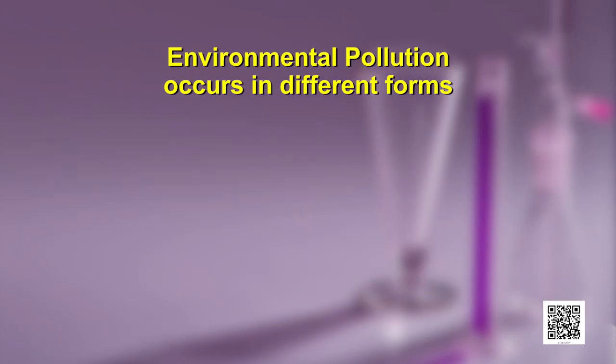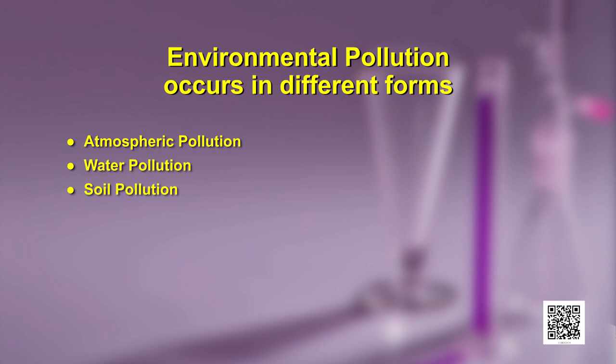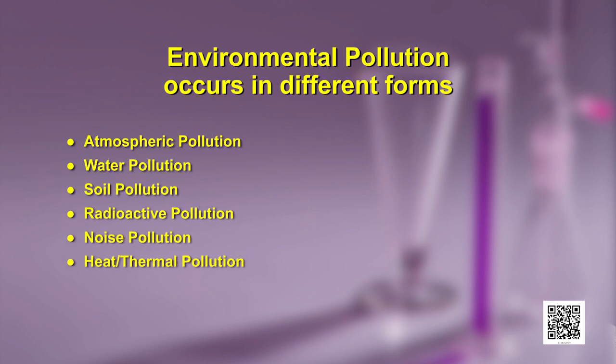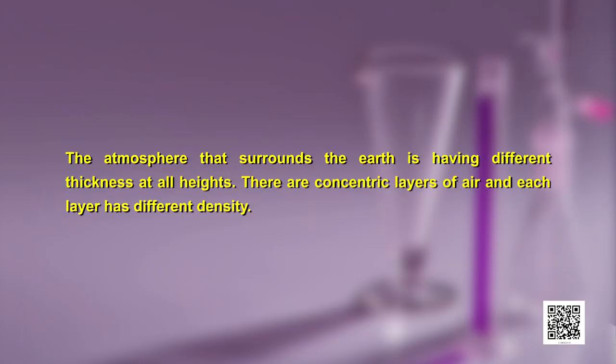Environmental pollution occurs in different forms: atmospheric pollution, water pollution, soil pollution, radioactive pollution, noise pollution, heat or thermal pollution, and even light pollution. I will talk about atmospheric pollution in detail. The atmosphere that surrounds the earth has different thickness at all heights — these are concentric layers of air, each with different density.